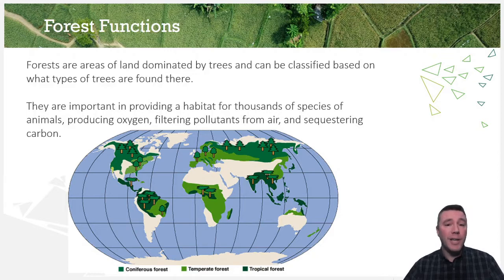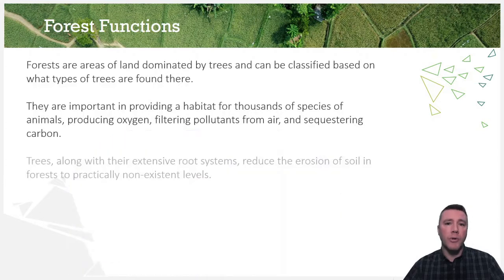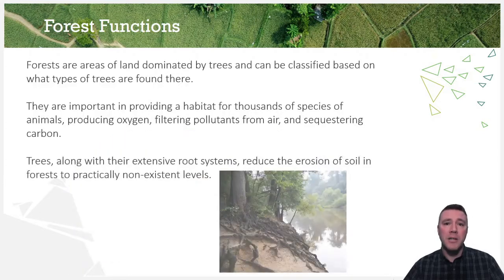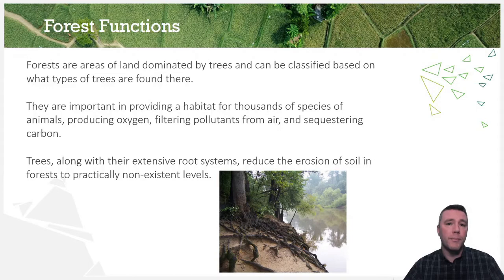Nearly 80% of all land animals and plants reside in forests. Soil erosion in forests is practically non-existent, thanks to the extensive root systems of trees that help to stabilize and bind together the soil.